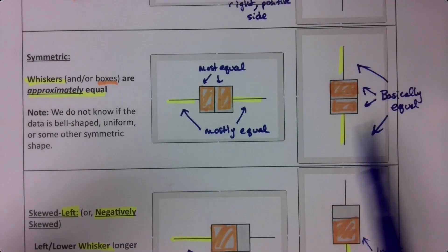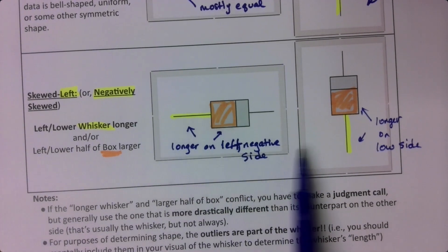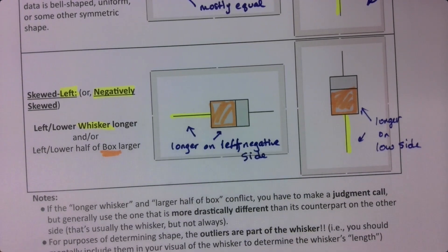This is that basically everything's equal. And this one's longer on the low side, the negative side, left side. Whichever way you want to think about it.